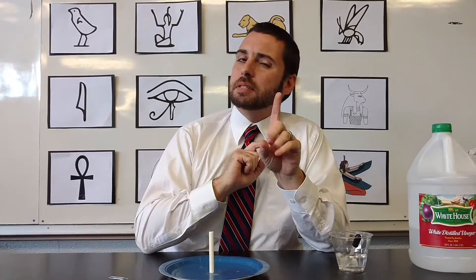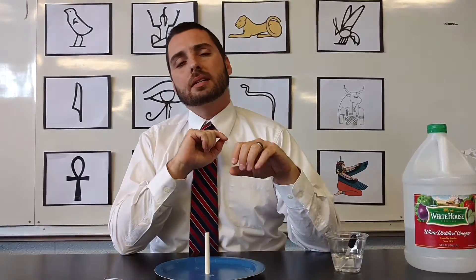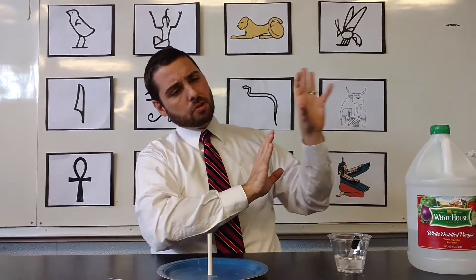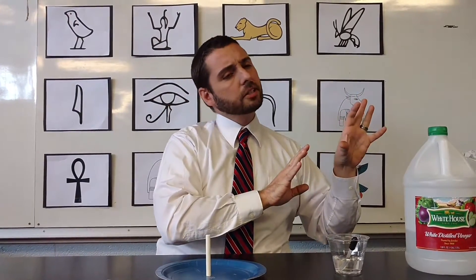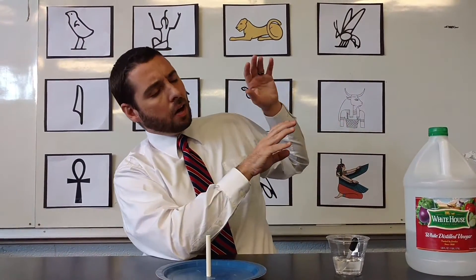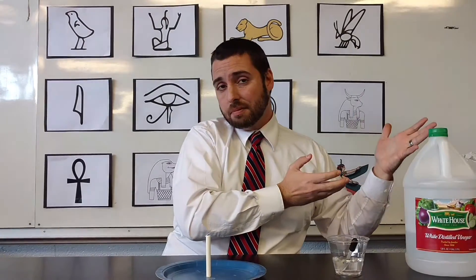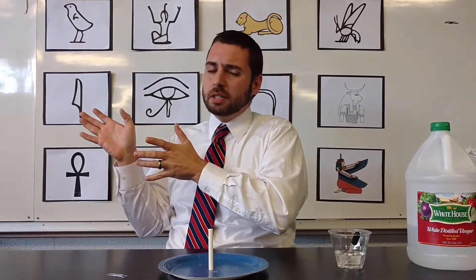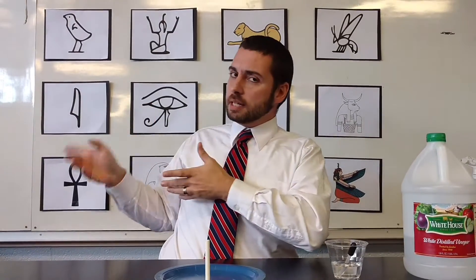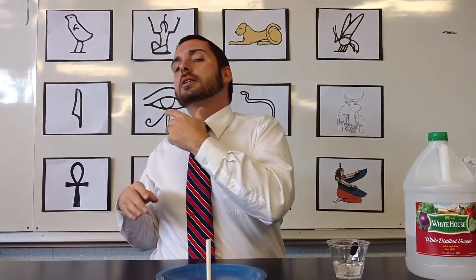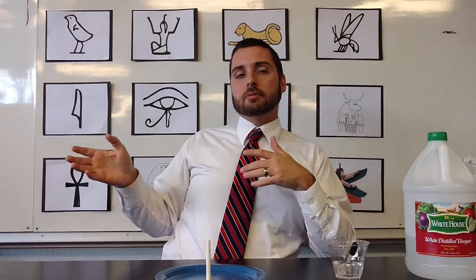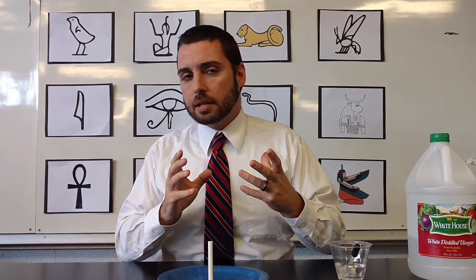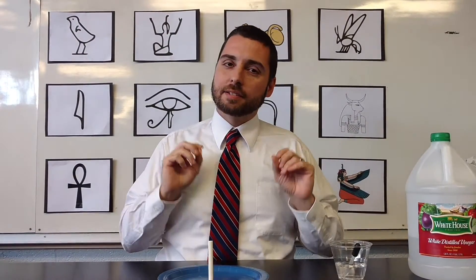I like to begin teaching my students about chemical weathering by taking them on a little bit of a picture walk. I show them a picture of a rock and we talk about how oxidation impacted that rock. Then we show them another picture of a rock and talk about carbonation and how carbonation impacted that rock. The final process I like to talk about is acid rain.